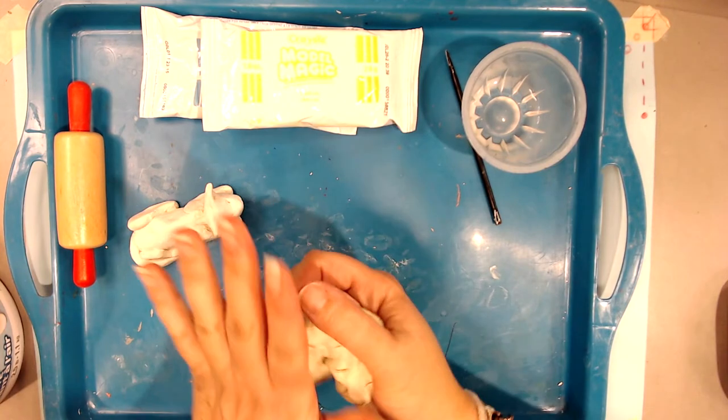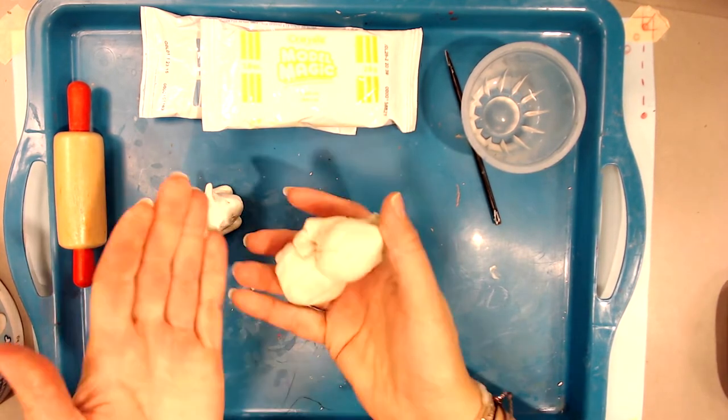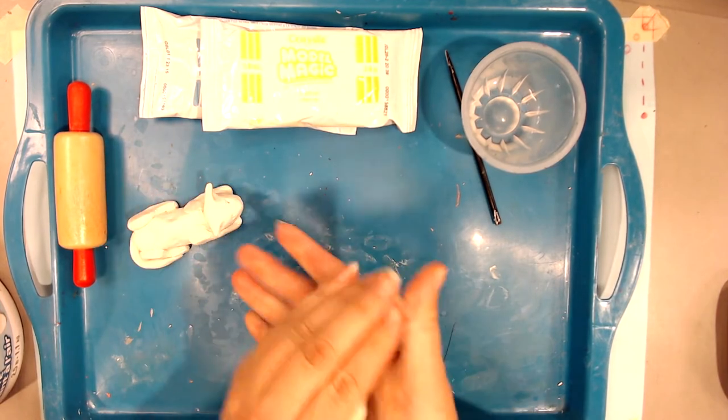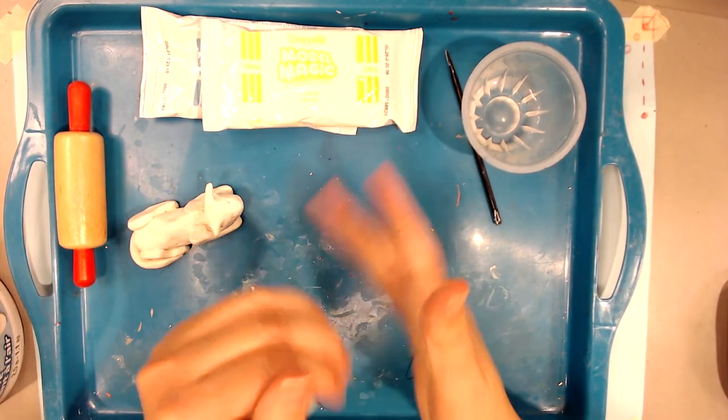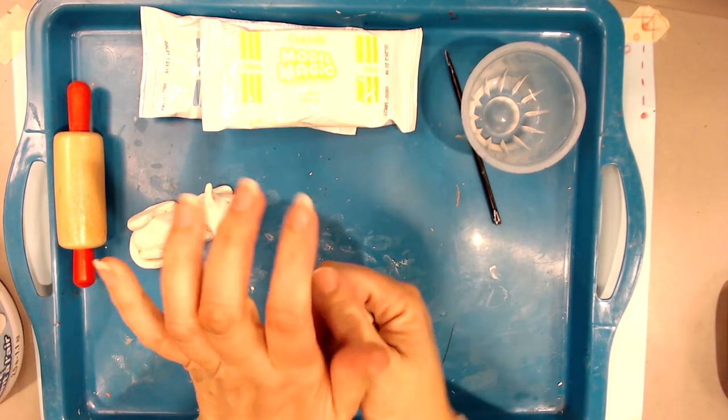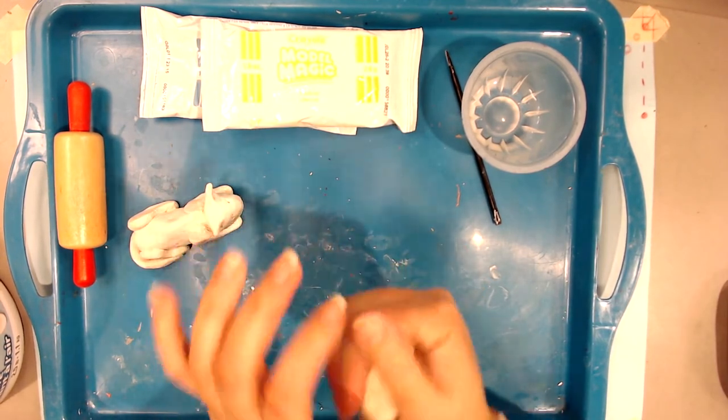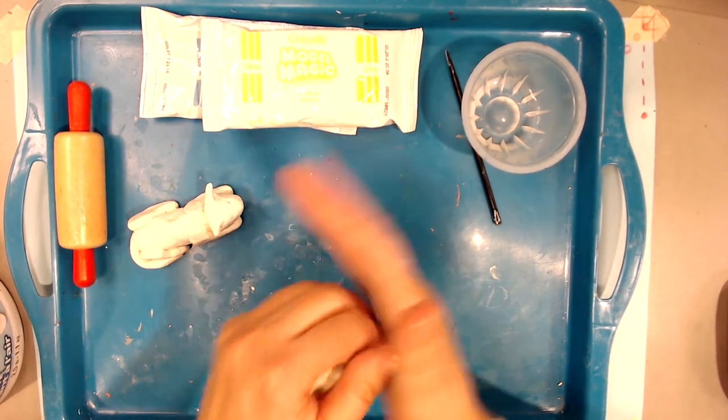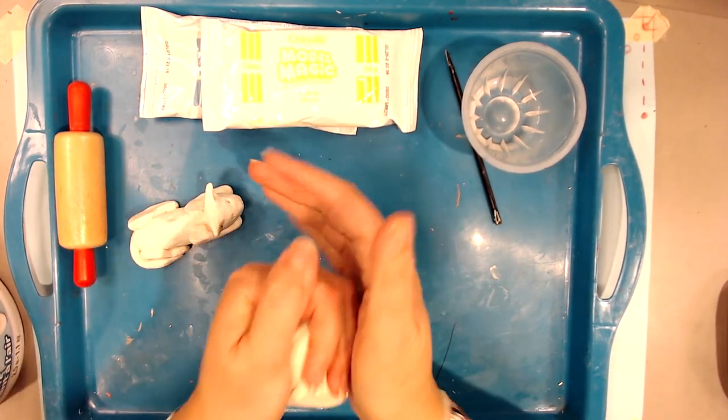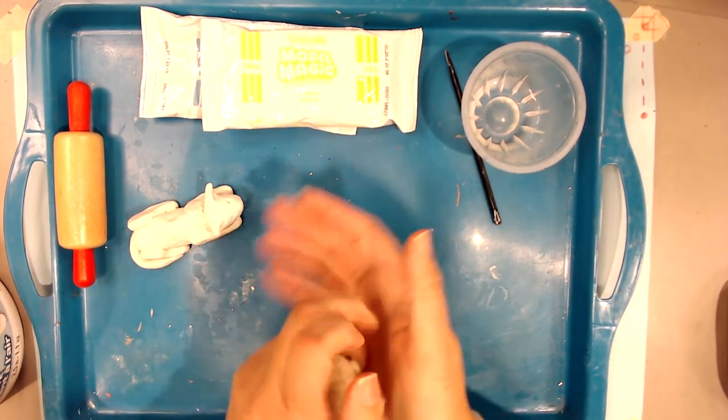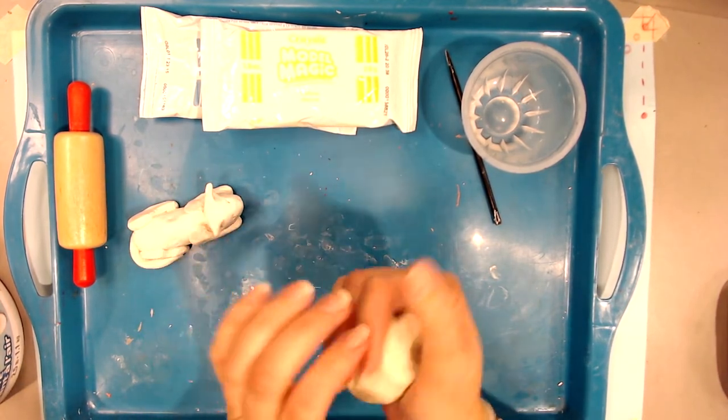I'm going to start by getting a small lump of clay and kneading it in my hands to warm it up. This is going to make the clay blend better, get the air bubbles out, and soften it up so it's a bit easier to work with. I'm just kind of taking a ball and smooshing it in my hands. If you're using Play-Doh, you may not need to do this.